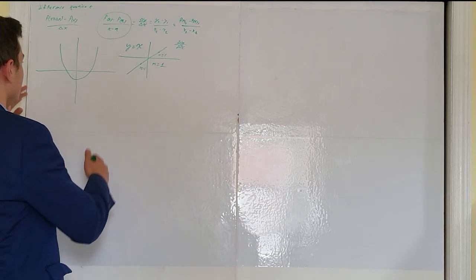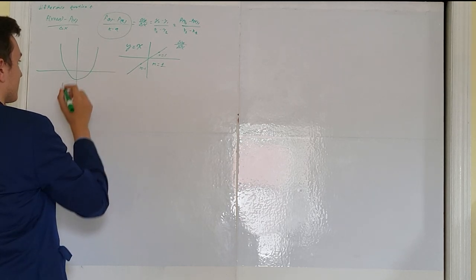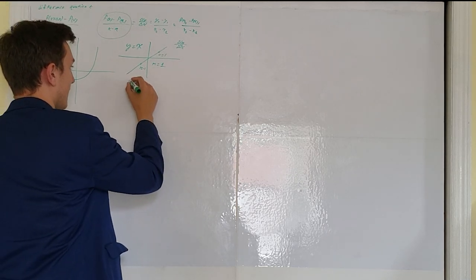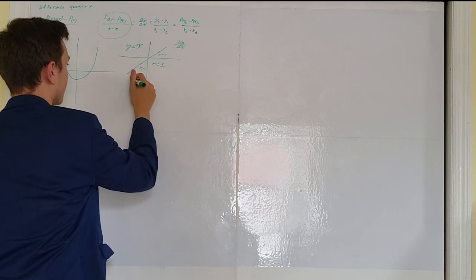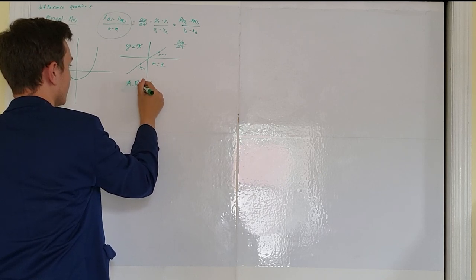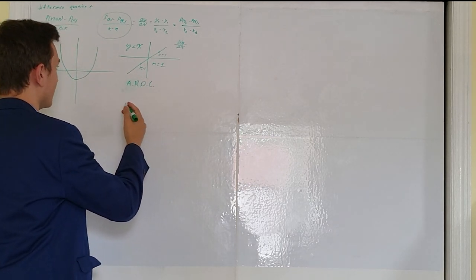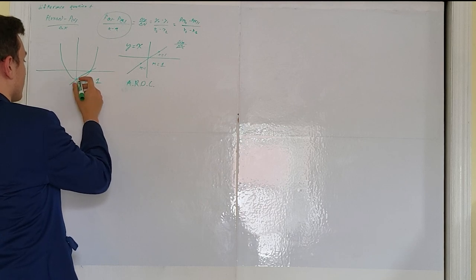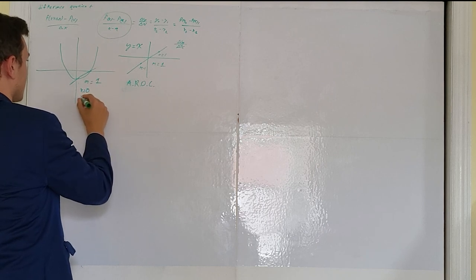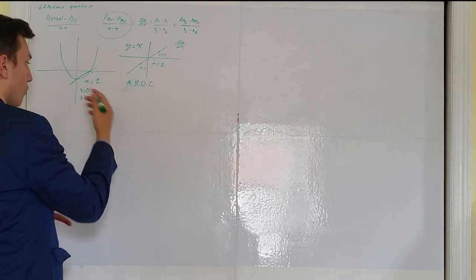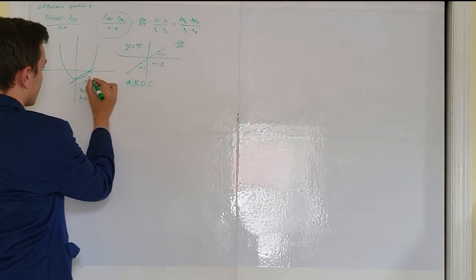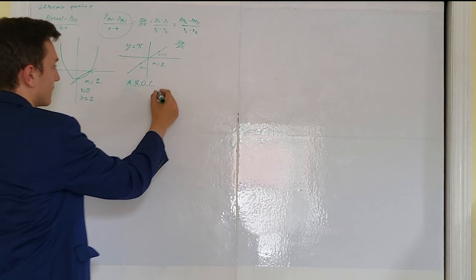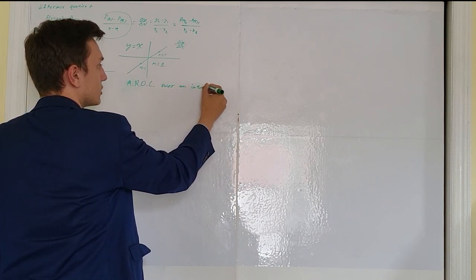What you didn't cover in PreCalc — this is uniquely a calculus topic — is how to find the slope of a parabola at a distinct point. In PreCalc you covered the Average Rate of Change, which you find by picking two points on a graph and drawing a straight line between them. The Average Rate of Change between x = 0 and x = 2 is 1 — for every two steps to the right, we go up two steps. But this only applies to an interval.